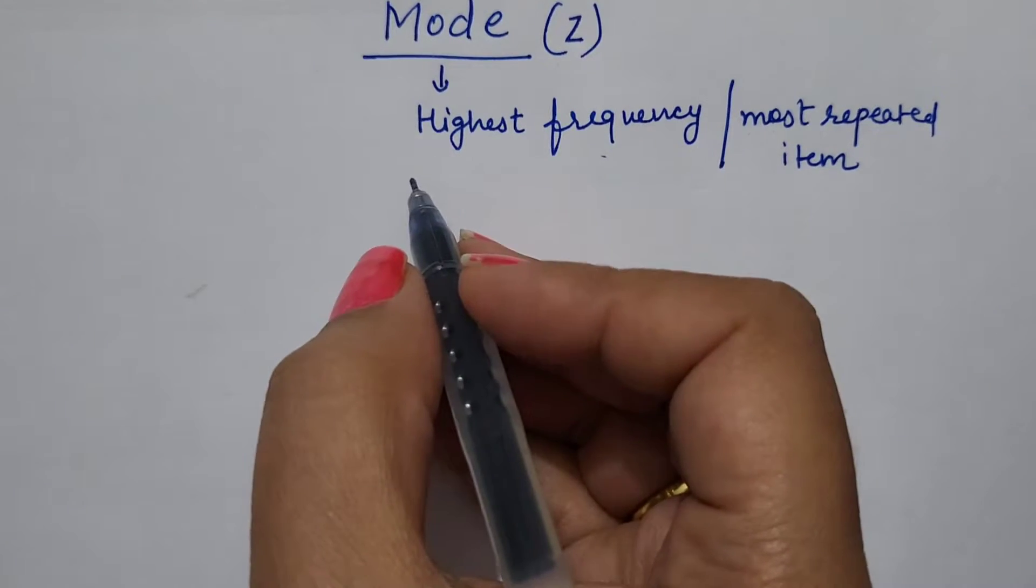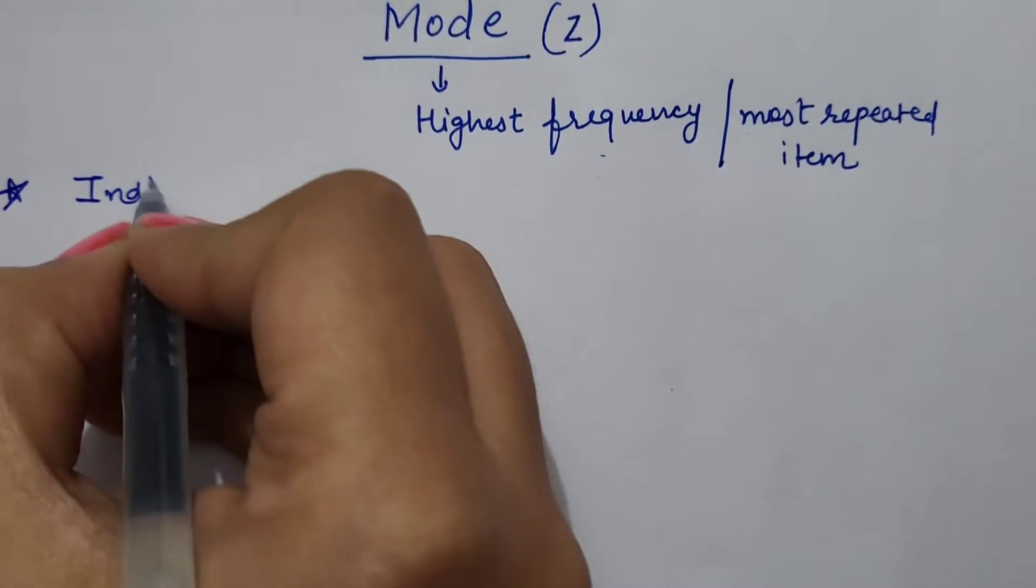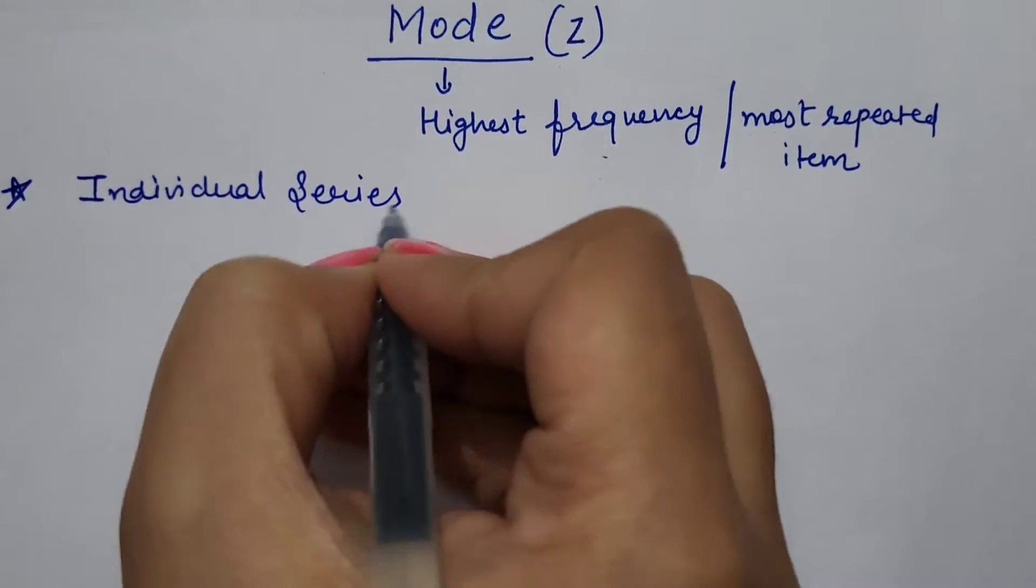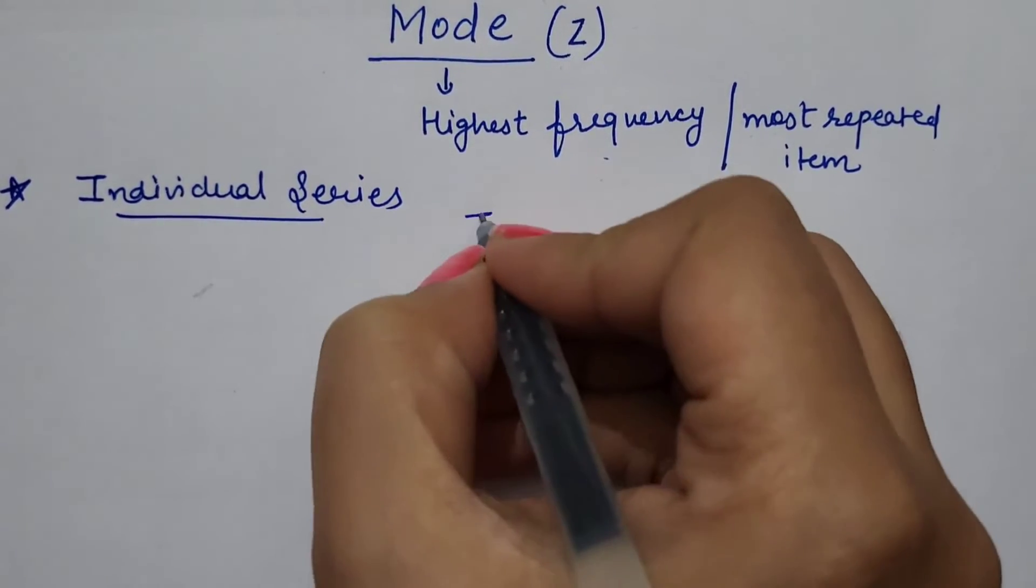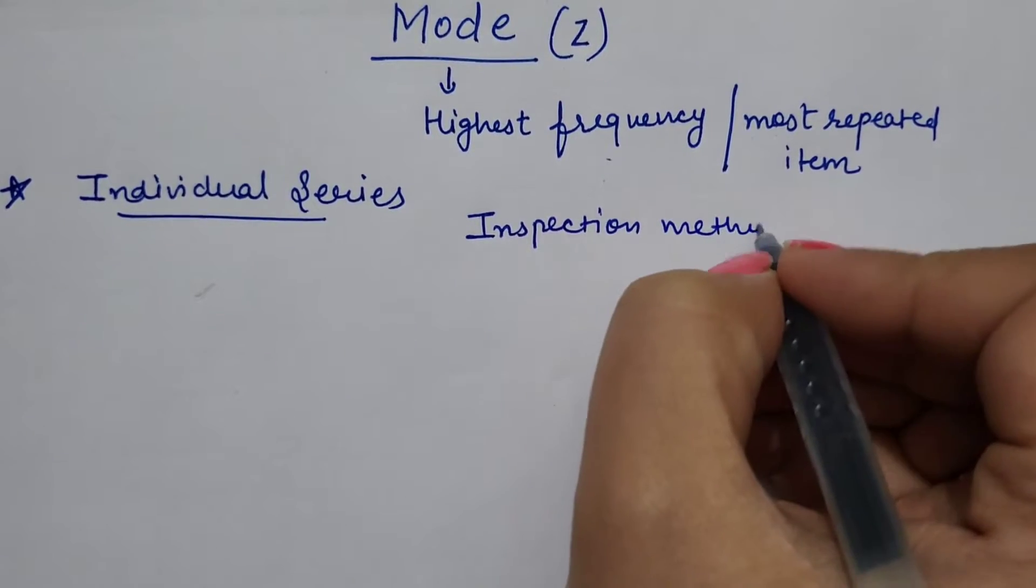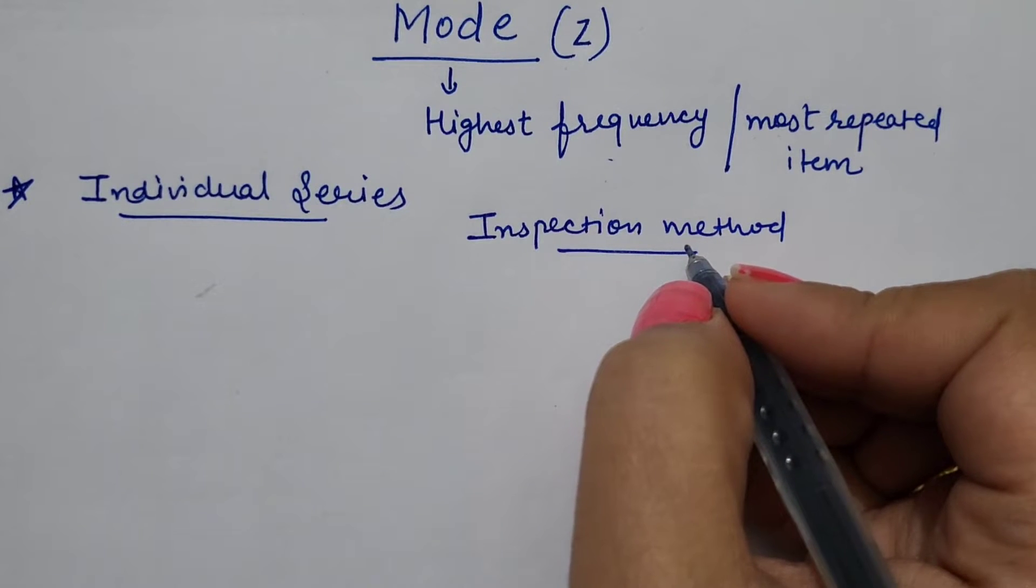How to calculate mode in different series? First is individual series. In individual series, we opt inspection method.